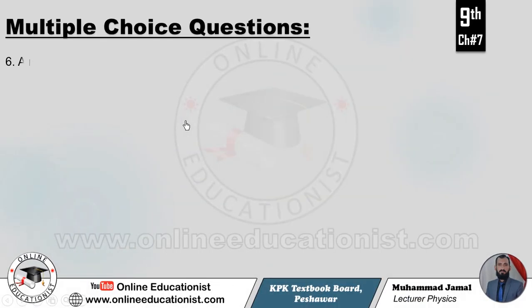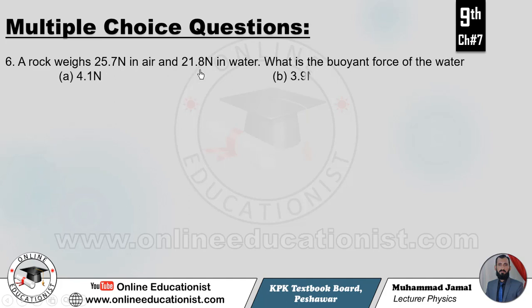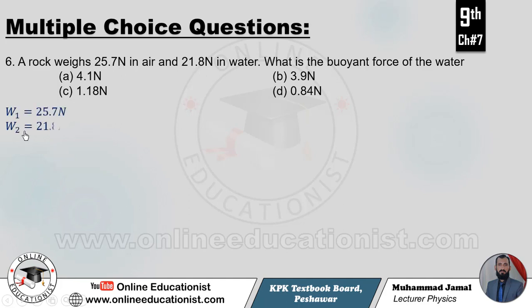MCQ number 6: A rock weighs 25.7 Newton in air and 21.8 Newton in water. What is the buoyant force of water? The buoyant force equals the difference between the weight in air and the weight in water: W1 = 25.7 N, W2 = 21.8 N, so buoyant force = 25.7 − 21.8 = 3.9 Newton. Option B is correct.